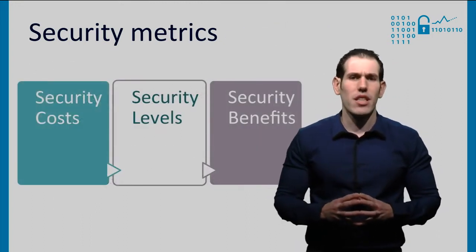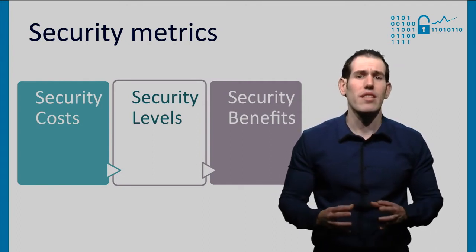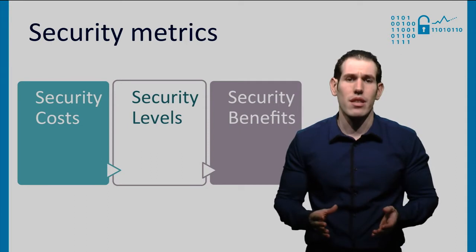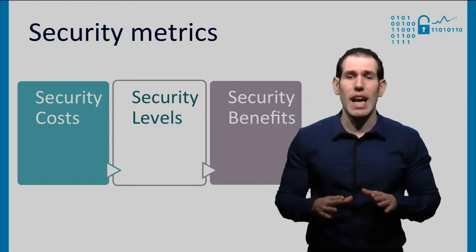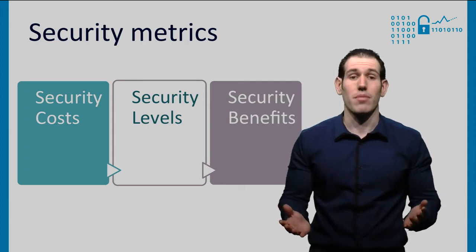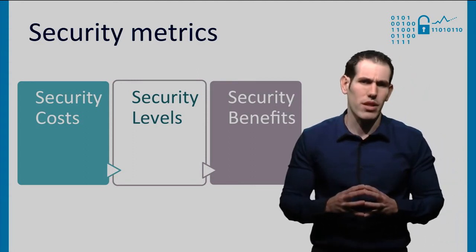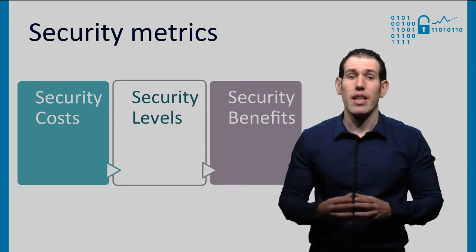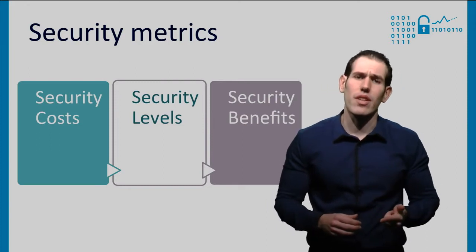The importance of security metrics is probably clear to you. Resources for information security are limited, especially in today's economic climate. You need the right metrics to justify and allocate security spending, to get actual security through this investment and thereby reaping certain benefits. To justify any investment in security programs, we have to quantify the cost as well as the benefits of those programs. It is helpful to include an intermediate step: the security level. In the following, we will define and explain the interaction among these three variables: security cost, security level, and security benefits.